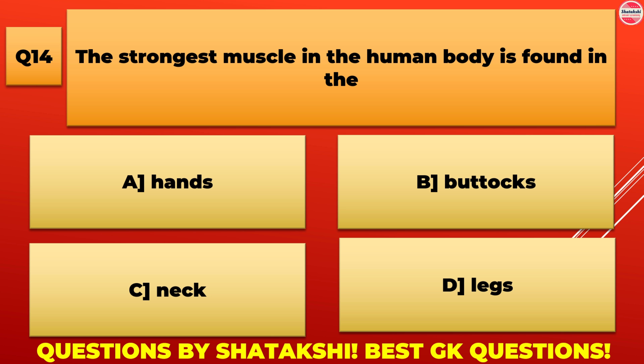The strongest muscle in the human body is found in the: A. Hands, B. Buttocks, C. Neck, D. Legs. B. Buttocks is the correct answer.